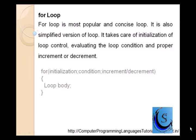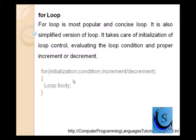Hello, in the previous lecture we had seen the while loop. Now you are familiar with loop technology. Let us start with the for loop. For loop is a simple version of loop because, as you remember, in the case of a while loop you have three parts: initialization, condition, and increment or decrement. These three parts appear on different lines, but in the case of a for loop, initialization, condition, and increment or decrement are combined in a single bracket. Therefore it is known as the simplified version of the loop.